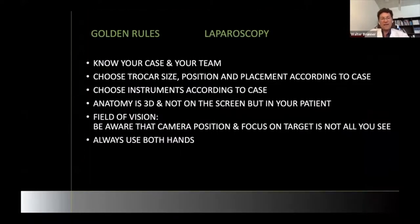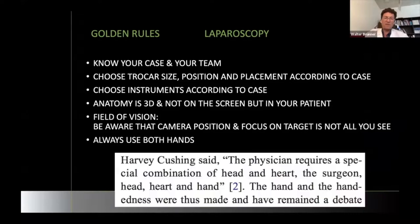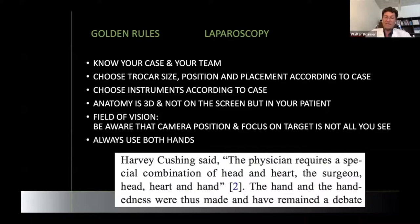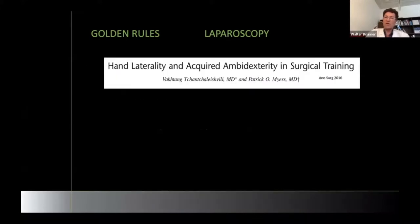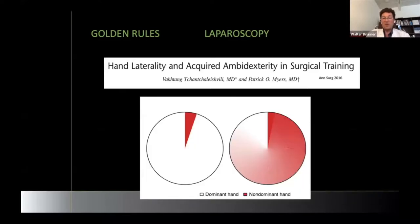You should always use both hands — especially in advanced laparoscopy. Many think this is obvious, but many people only use one hand. Cushing said physicians need a special combination of head and heart, but the surgeon needs head, heart, and hand. If you think you can't do the same thing with your left hand as with your right, there is work on ambidexterity in surgical training. Your dominant and non-dominant hand — you can cover at least 80 to 90% with your non-dominant hand if you do good training.